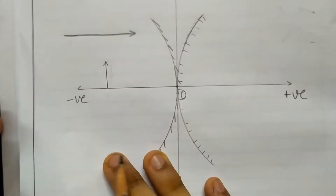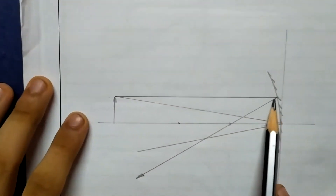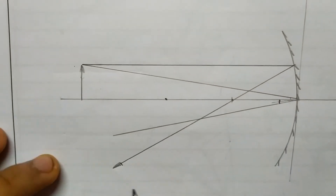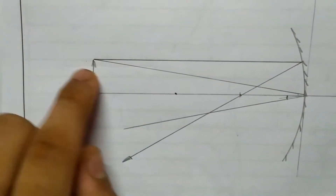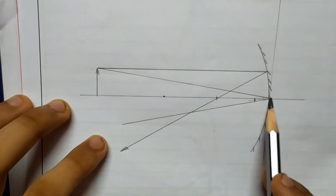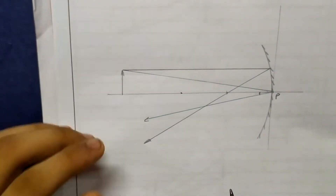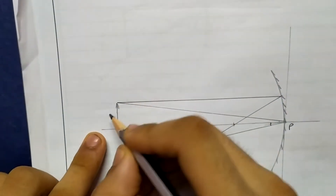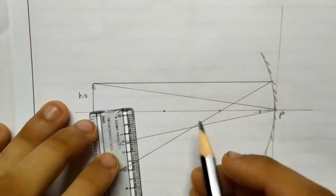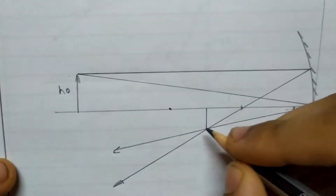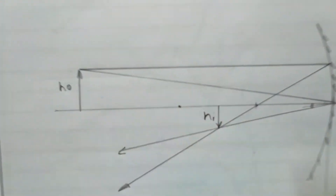Now that you have understood the conventions, let us derive our mirror formula. Here is the basic setup: an object, light rays come in and get reflected. A parallel ray gets reflected and passes through the focus, and the ray going to the pole reflects off it. The height of the object is called h-o, and the image forms below the axis with height called h-i.